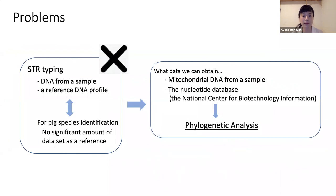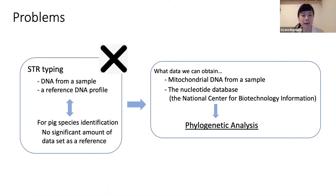The common method for identification is STR typing. In this method, by comparing the data of unknown samples with a reference DNA profile, the identification can be done. However, since there is no significant dataset as a reference for Sus species, STR typing is not useful for Sus species identification. We can all access the large nucleotide database collected by the National Center for Biotechnology Information, and mitochondrial DNA sequences can be obtained from samples processed and stored under extreme conditions. Our question was: how can species be identified from available data? The answer was phylogenetic tree analysis by applying evolutionary differences in the DNA sequences.